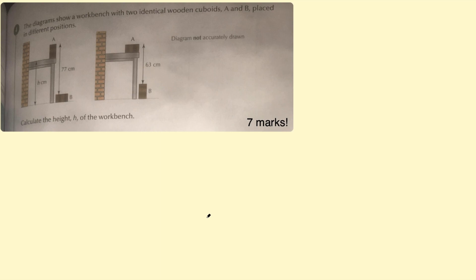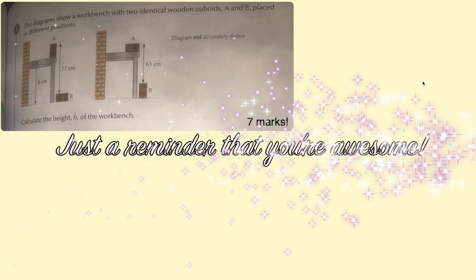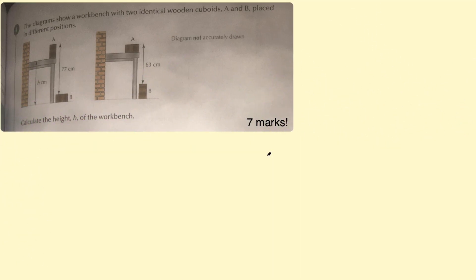So if you haven't already, pause the video now and have a go. Okay, welcome back if you had a go at this question already. So the question says the diagrams show a workbench with two identical wooden cuboids A and B placed in different positions.